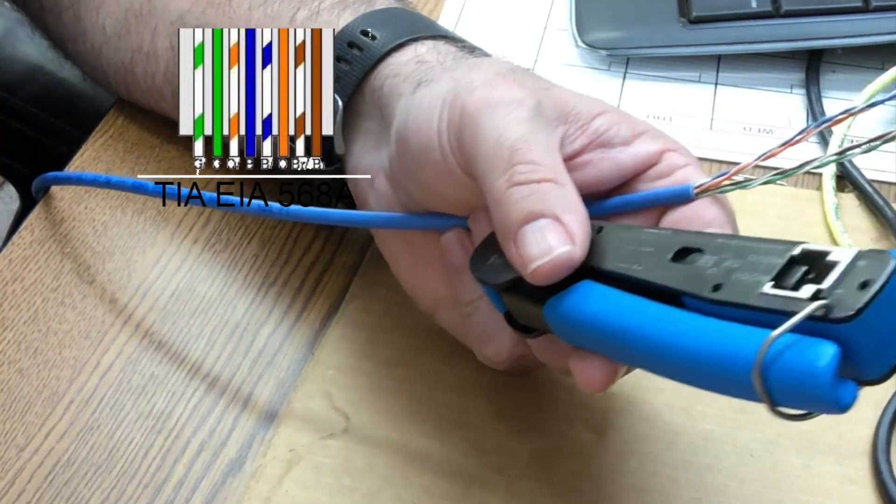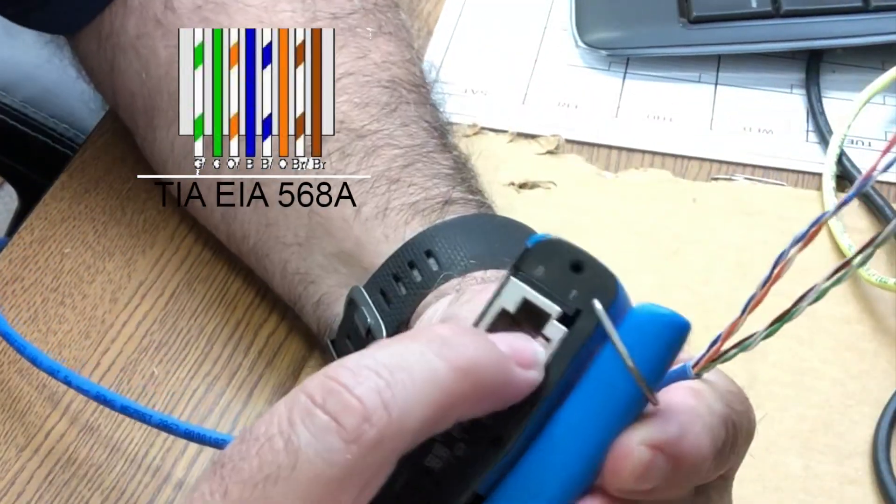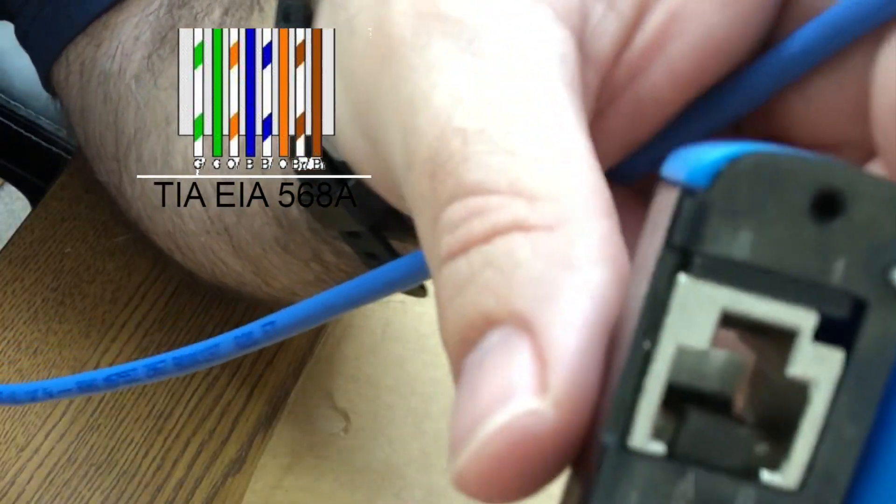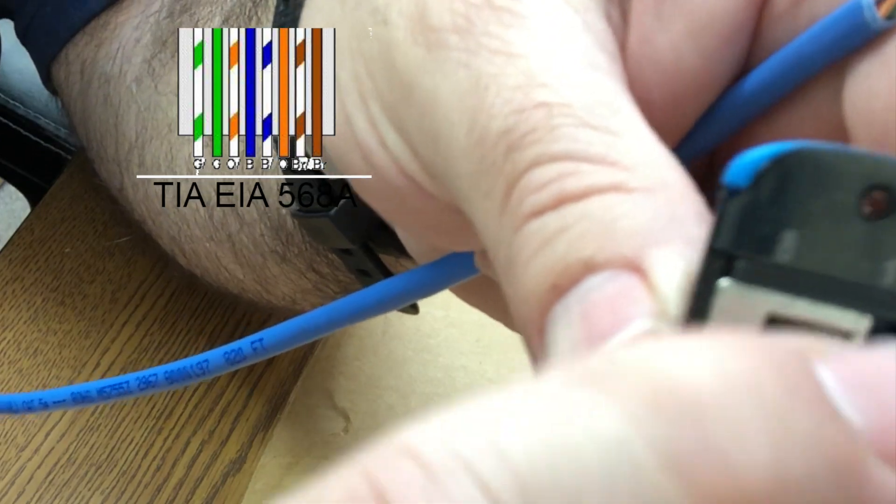The other thing I wanted to show you with this tool is here on the top it's got some numbers. There's a one and then on this side there's an eight. Well there's eight cables, eight pieces of wire here, four pairs.